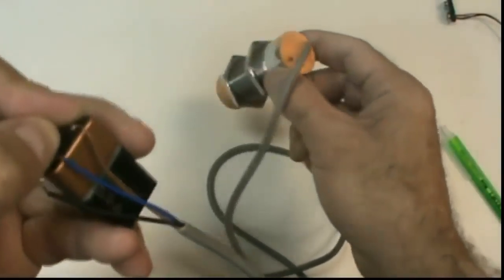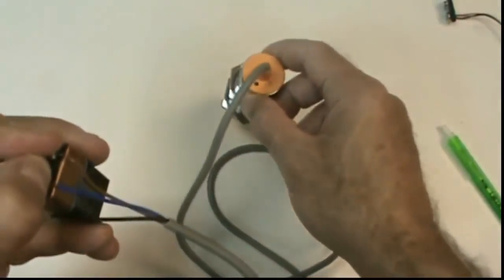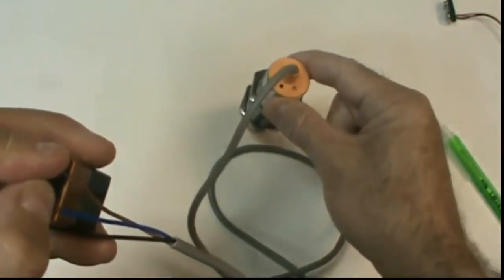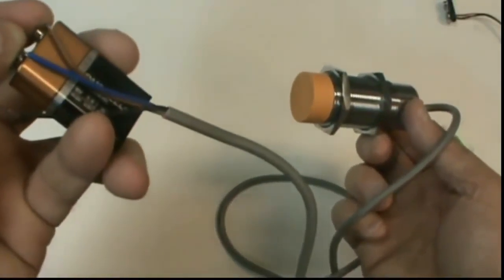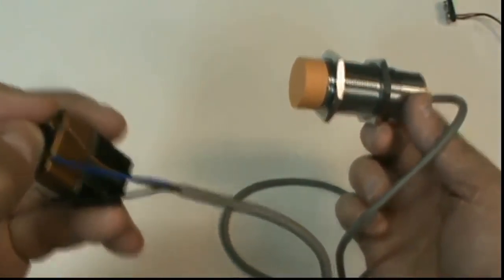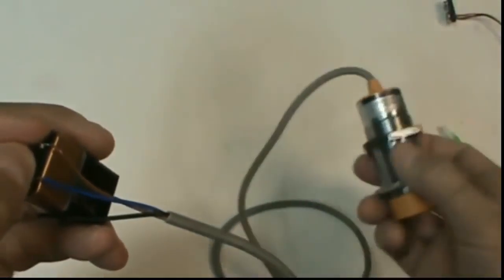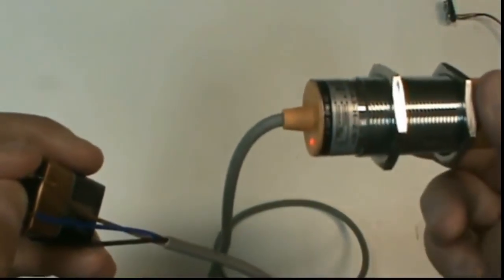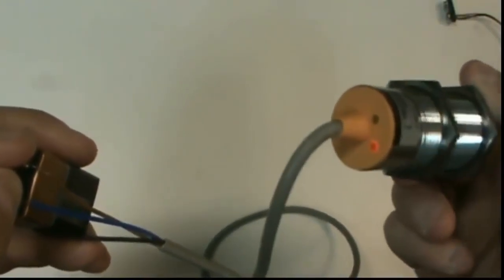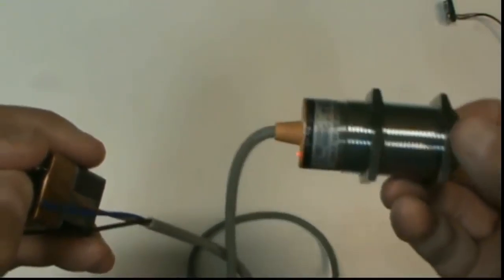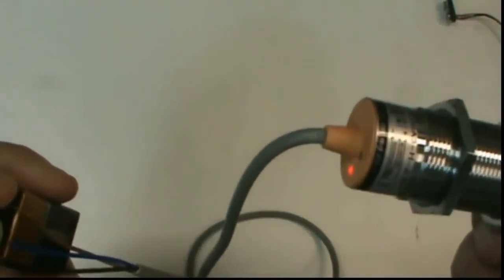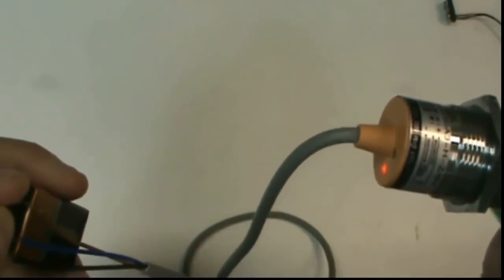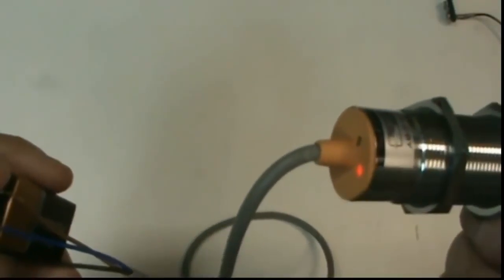To get the signal out of the black wire, we've got to hook it up a certain way. Since this is a PNP sensor, the output has to be between the black wire and ground, because this is what we call a sourcing sensor. Sourcing means that when the sensor is activated, it completes the path to V+, and sinking means the opposite. The sensor completes the path to ground or V-minus.